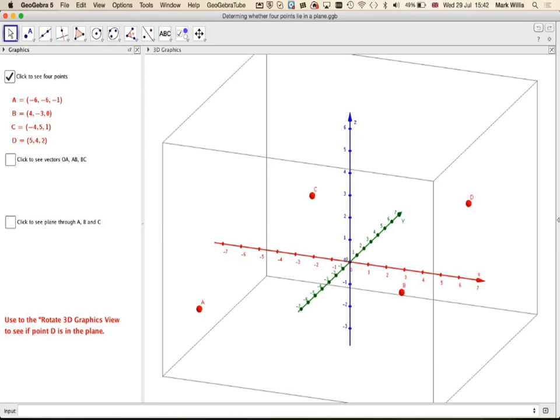Now remember, in order to make a plane, all you need is three points. We're going to take the points A, B, and C and form them into a plane, and then check to see whether point D actually lies on the plane. Now you don't have to take A, B, C. You can take any of the three points.